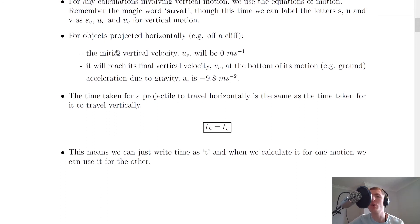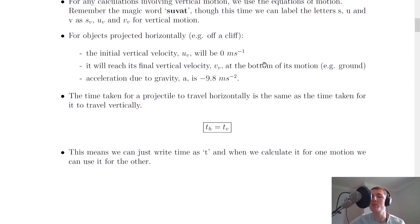We also need to be aware of a few key numbers. For objects projected horizontally, for example off a cliff, the initial vertical velocity, uv, will be 0 metres per second. The reason is, if we look back at the picture, when we first start the horizontal motion, the object is not going to be moving vertically in any way yet. So its initial vertical velocity must be 0.